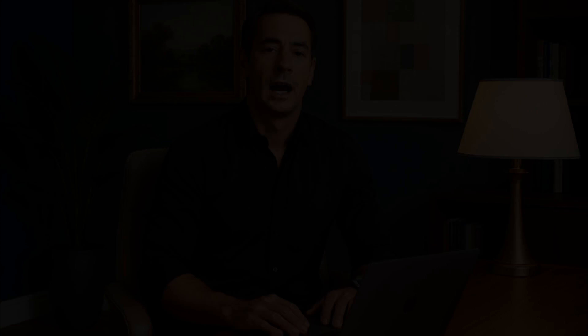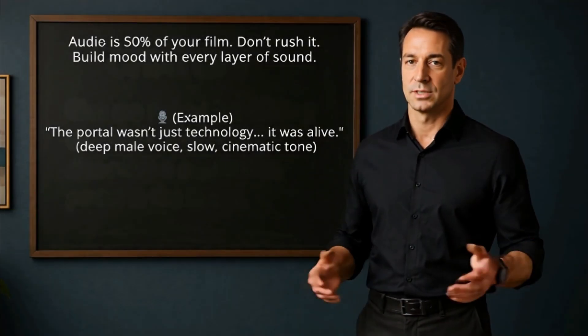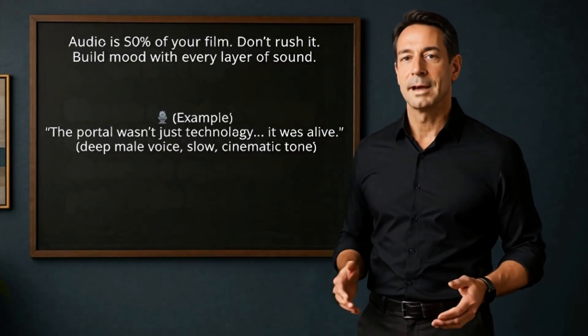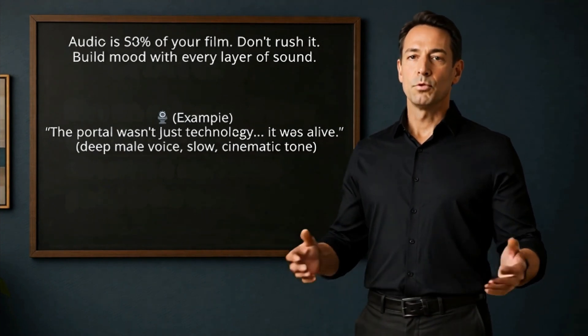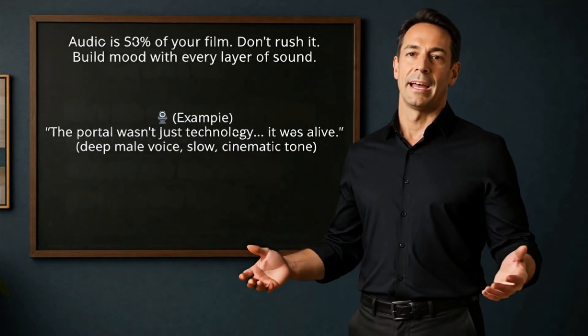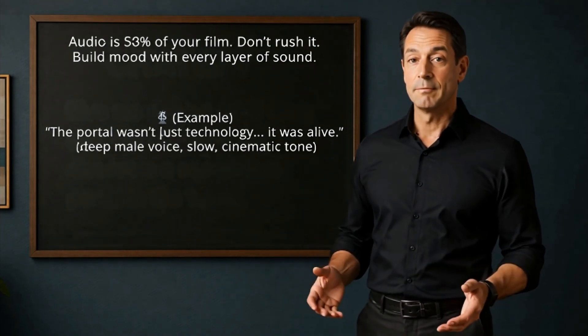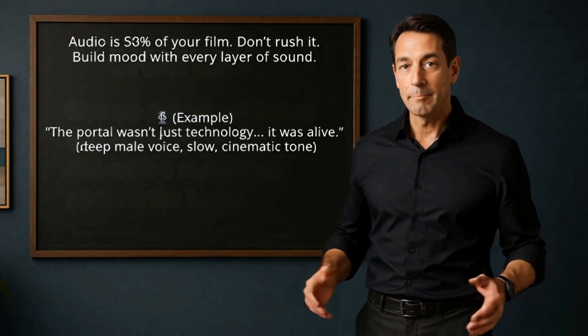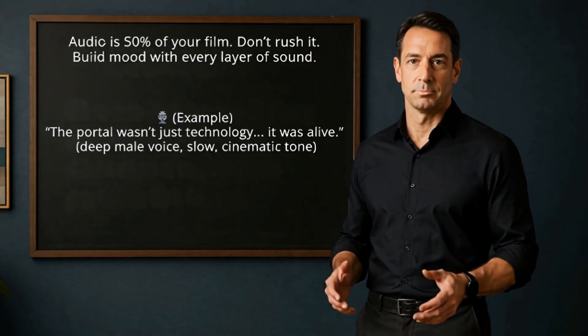Now you need voices, music, and sound effects — everything that makes the scene feel alive. For voice acting, use Eleven Labs. It lets you create realistic voices for narration or dialogue. Test different voices until you find the perfect one for your film. Example: 'The portal wasn't just technology. It was alive.' — deep male voice, slow, cinematic tone. For music, use Suno.ai to generate original cinematic scores. For sound effects, use freesound.org. You'll need ambient sounds: wind, footsteps, glowing energy, portal hum.